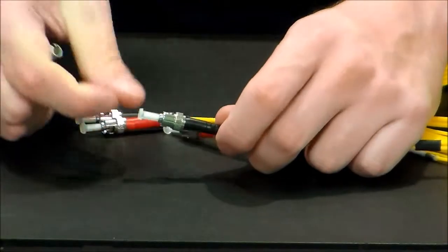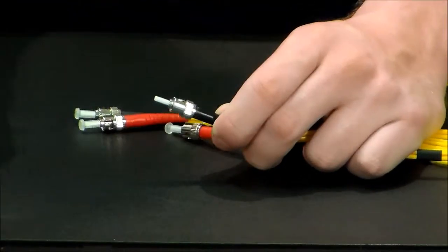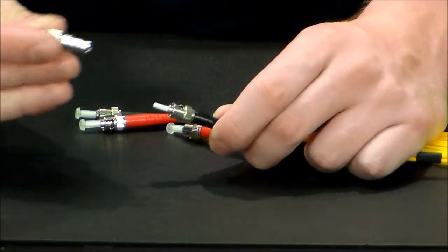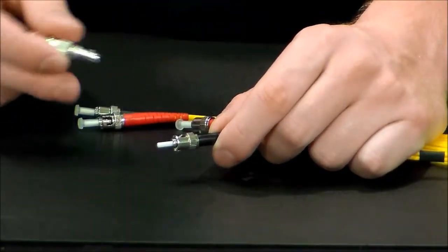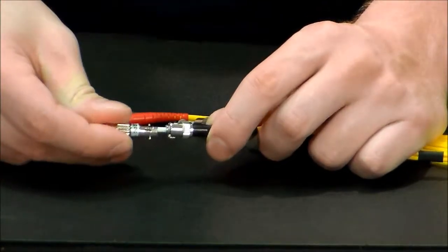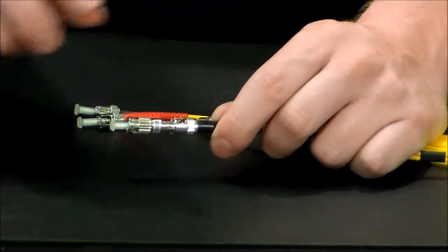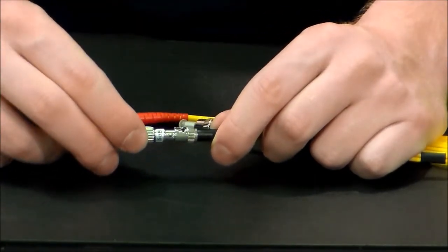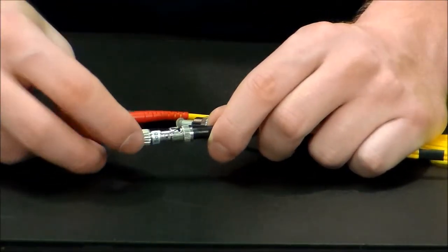And then when you have your cable, it should come with tabs as well, we're going to pull off the tab. And what we're going to do is the cable has a candy cane design on it, and you've got to make sure that the attenuator and the candy cane are lined up.